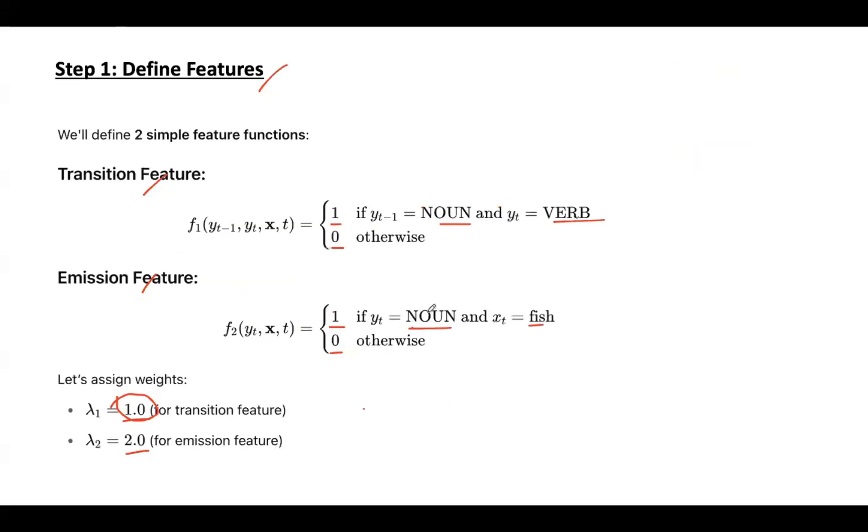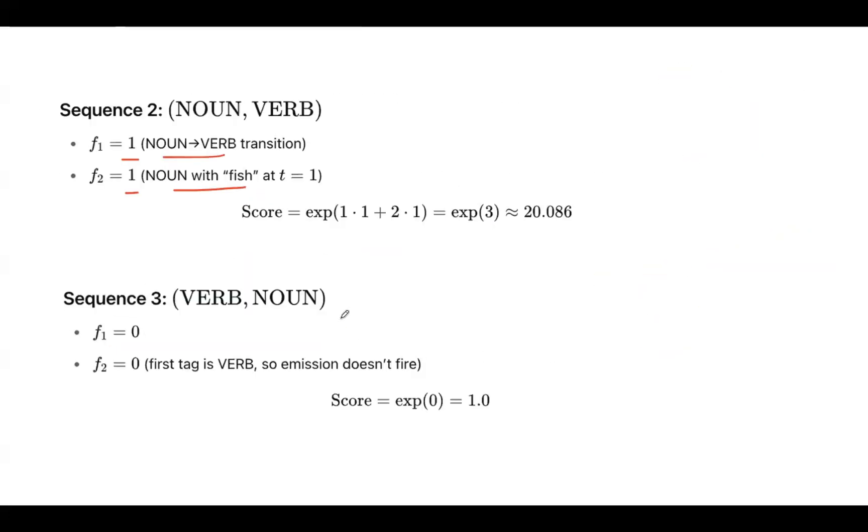Noun with input symbol or input word fish, so value is 1. In both the cases, the feature fires and value will be 1. You just multiply that by weight and we will get this score.